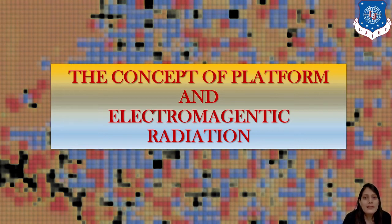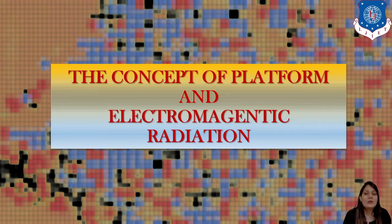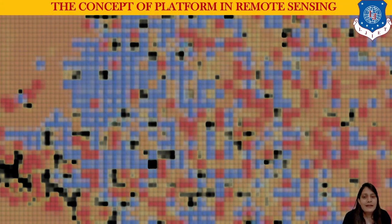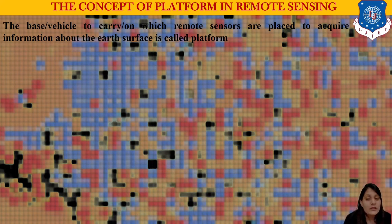What do you understand by electromagnetic radiation? Let us see in detail. The concept of platform — in the previous session you saw that platforms were different. First was the balloon, then we tried on pigeons by mounting cameras, then the Wright brothers' flight, then aircraft. The base vehicle on which remote sensors are placed to acquire information about the earth surface is called a platform. The satellite acts as a platform.